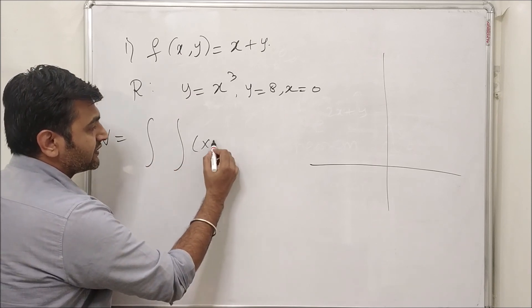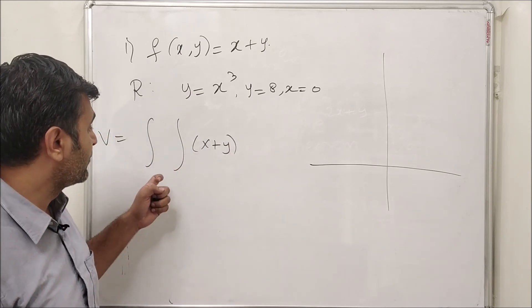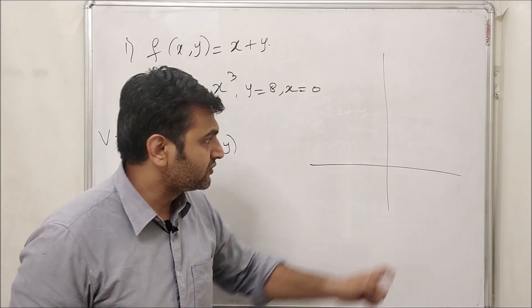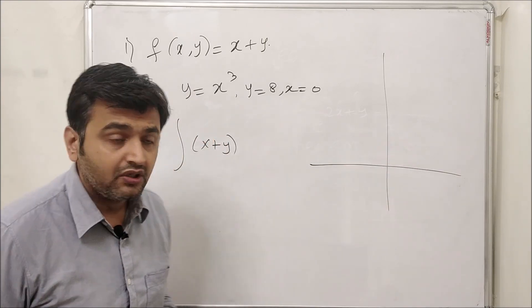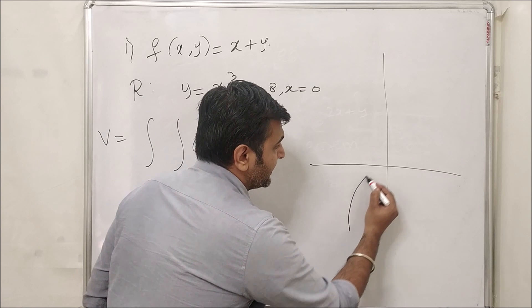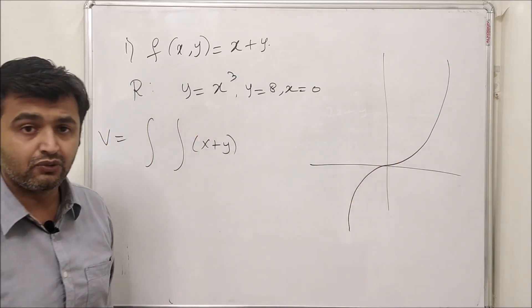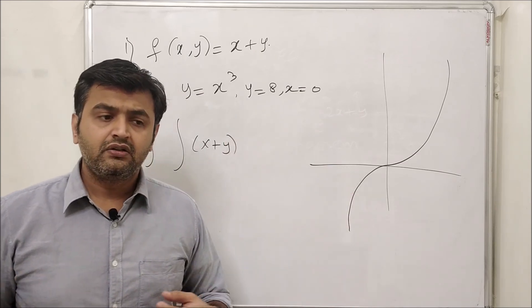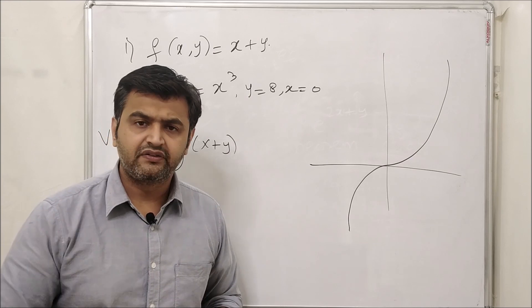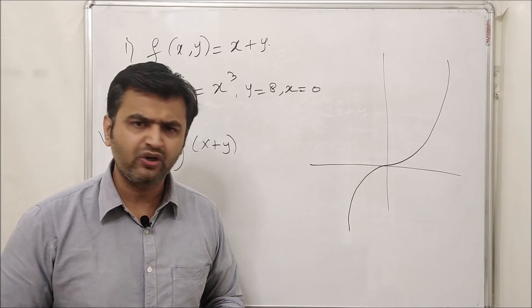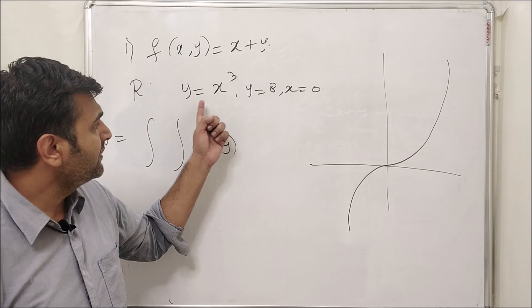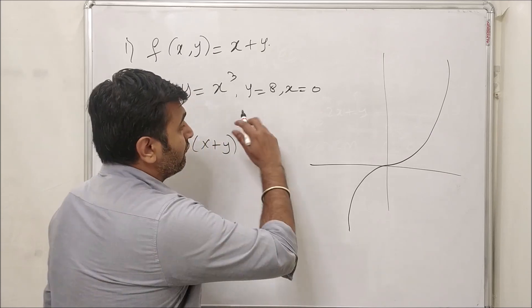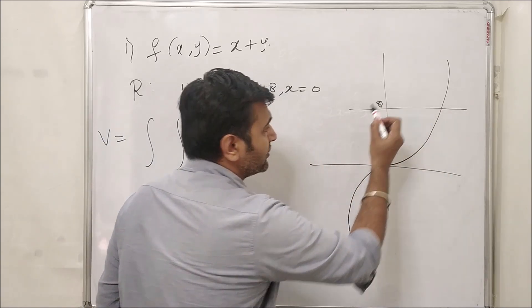To write down the limits, it's always a good idea to draw the region first. Now, y = x³ looks like this — it's an odd function. If you don't know this standard graph, you can download a free app like Grapher Free on your phone, put in y = x³, and it will give you the curve. Next, y = 8 is a horizontal line, and x = 0 is the y-axis.